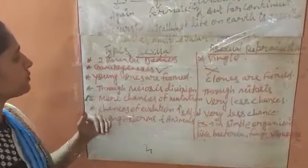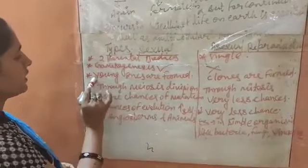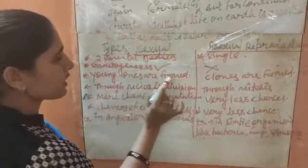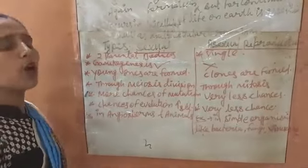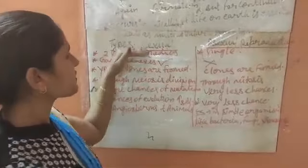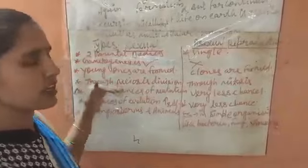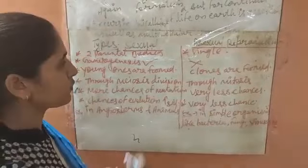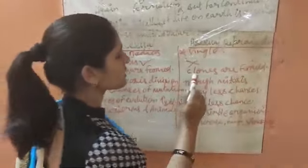Another difference: in sexual reproduction, the offspring produced are called young ones. The offspring produced by this method are considered as young ones. While in asexual reproduction, they are considered as clones — meaning they are 100% identical to their parents.